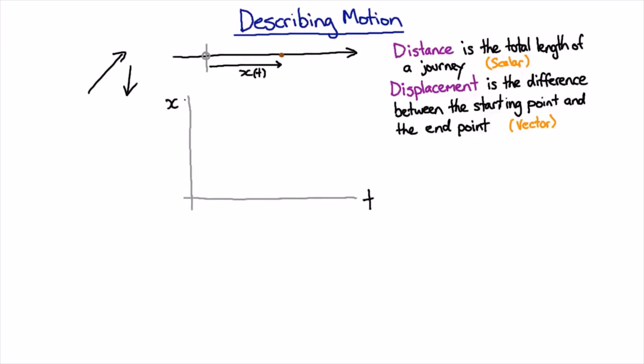If we have a graph of position as a function of time, then if they're not moving at all, they'll stay at the same position. And if they are moving, this will have a slope. And if they change the slope, that means they're going to change their velocity.